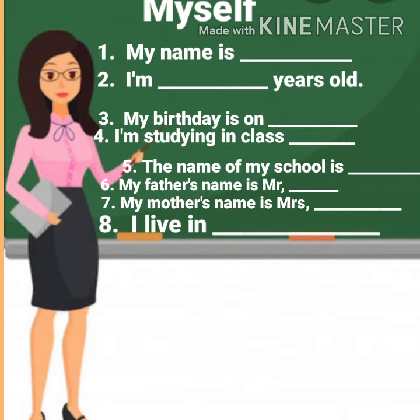Number five: 'The name of my school is dash' — mention your school name. Number six: 'My father's name is dash' — and you have to write 'Mister' before the name of your father. Number seven: 'My mother's name is dash' — and you have to mention 'Mrs.' in front of your mother's name.